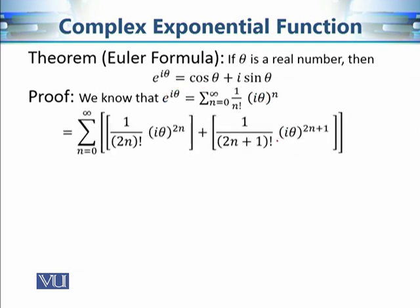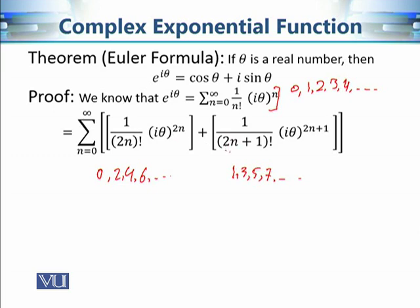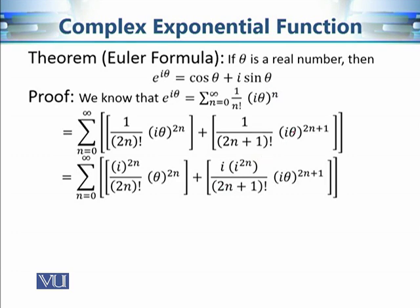In the series Σ (1/n!)(iθ)ⁿ, the terms for n = 0, 2, 4, 6, … are the even terms and n = 1, 3, 5, 7, … are the odd terms. When n = 0 the even index is 0, when n = 1 it gives index 2, and so on. We write these two groups separately.